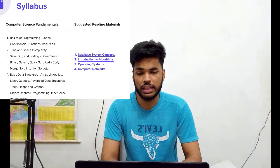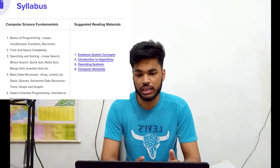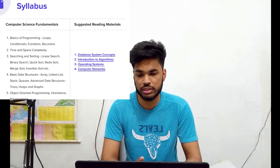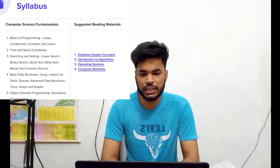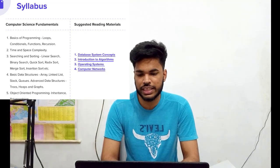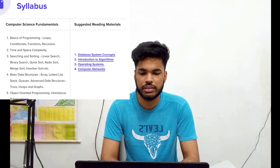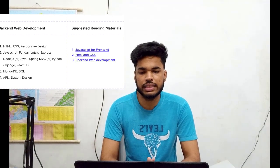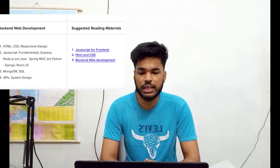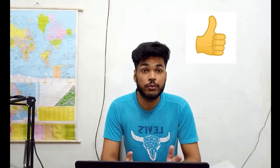The result will show detailed labels. For computer science, topics include loops, conditions, functions, recursion, time and space complexity, searching, sorting, basic DSA, object-oriented programming, computer networking, DBMS, and operating systems. For backend web development, topics include HTML, CSS, responsive design, JavaScript fundamentals, MongoDB, SQL, APIs, and system design.